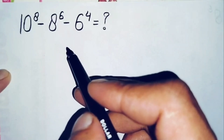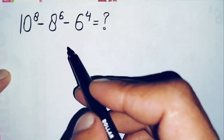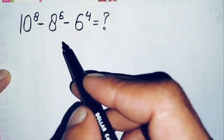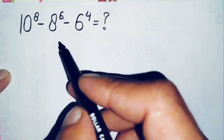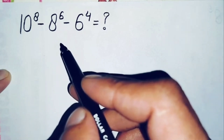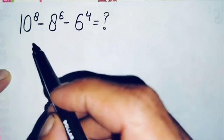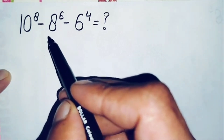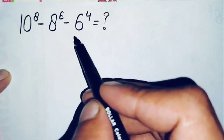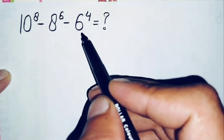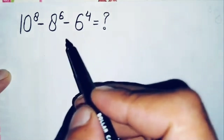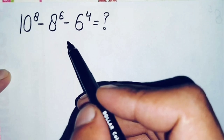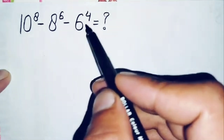Hello everyone, welcome back to Math Explorer. In this video I'm going to solve and find the value of this wonderful simplification math problem, which is 10 raised to power 8 minus 8 raised to power 6 minus 6 raised to power 4. So how can we solve this math problem? First of all we will factorize the powers.